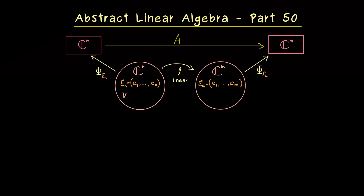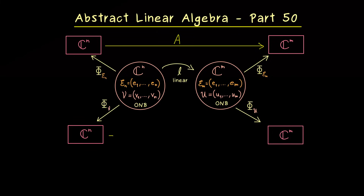This diagonalization is done by choosing a different basis V, which should consist of N vectors and, like the standard basis, should also be an ONB with respect to the standard inner product. A similar thing happens on the right-hand side, where we choose an ONB U with M vectors. These two ONBs imply that we might get some interesting basis isomorphisms, and such a change of basis gives a corresponding matrix representation that is a diagonal matrix, which we call sigma.